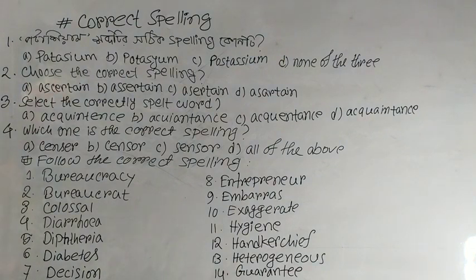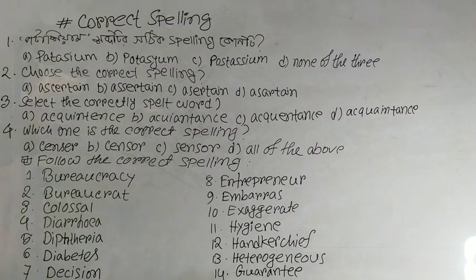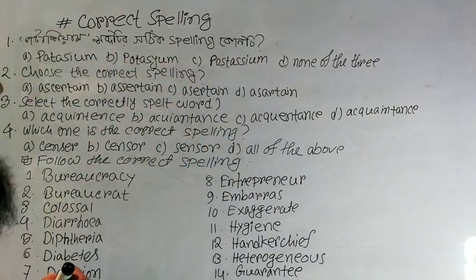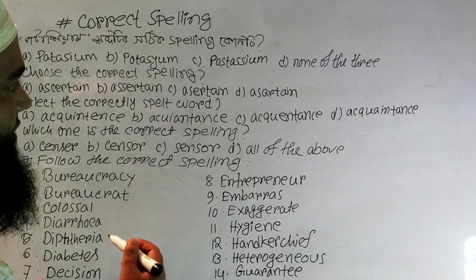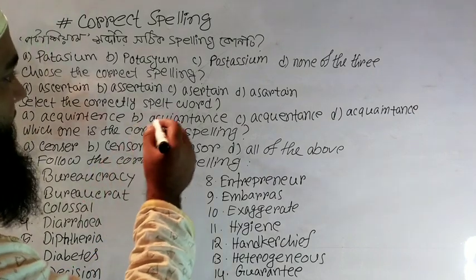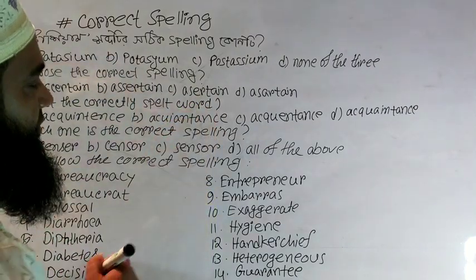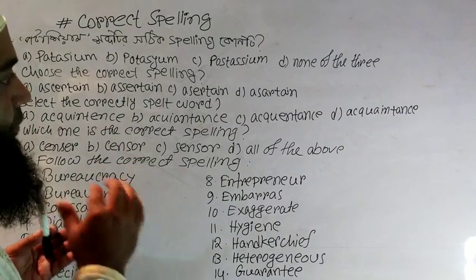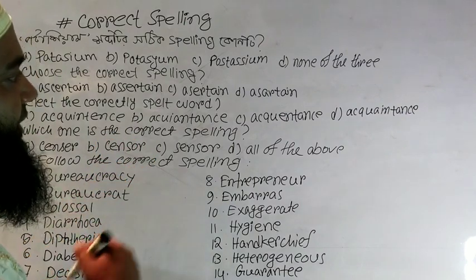First, the equation will be a small spline. With potassium, we do option A or B. The option is P-A-T-A-S-I-U-M. Also, with potassium, we can find potassium. It's about P-O-T-A-S-Y-U-M.